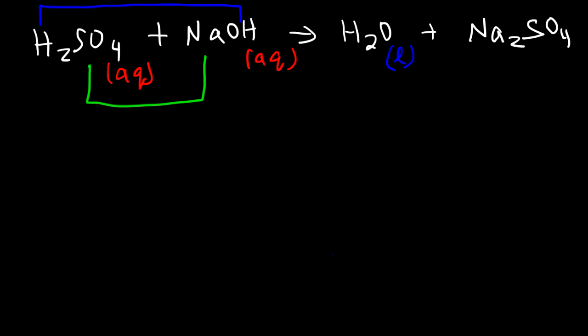So how can we balance this reaction? Well for one thing we have two sodium atoms on the right side. So we gotta put a 2 in front of NaOH. And now notice that we have a total of four hydrogen atoms. Two from NaOH and two from sulfuric acid. So therefore to balance the hydrogen atoms we need a 2 in front of water. And so now the chemical reaction is balanced.